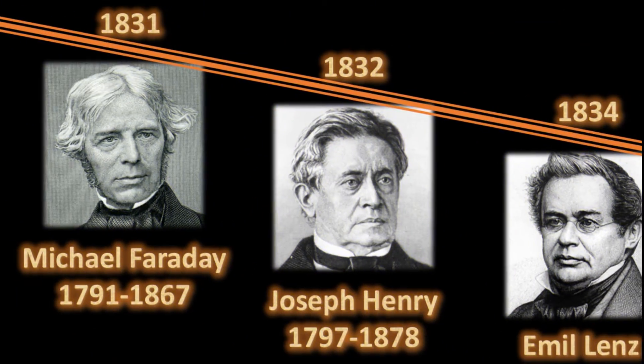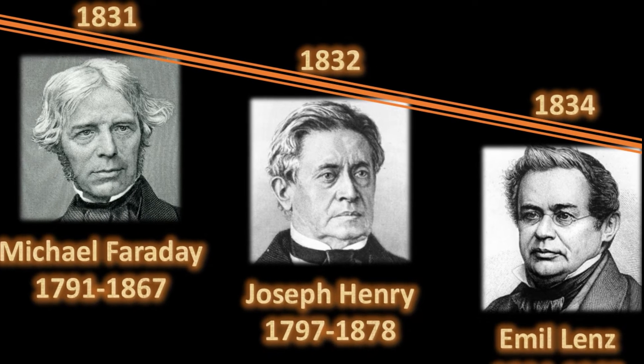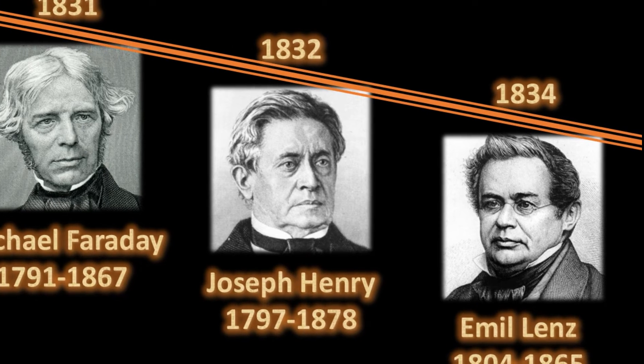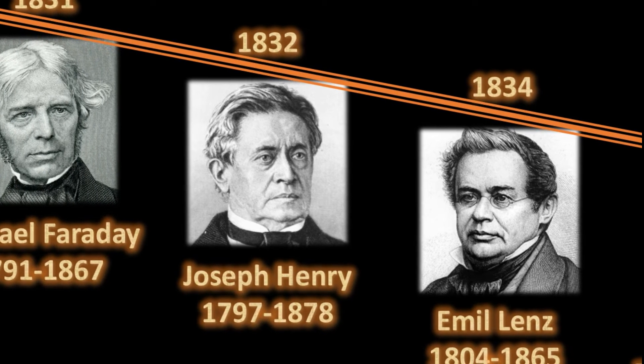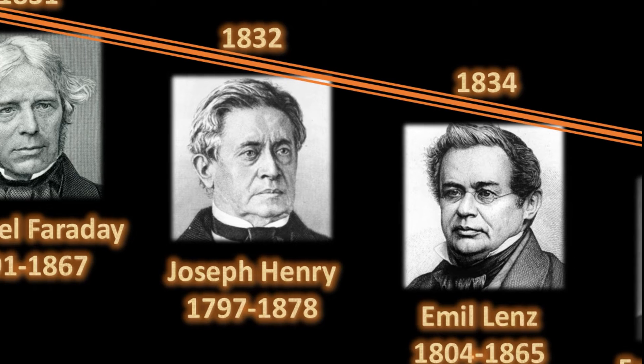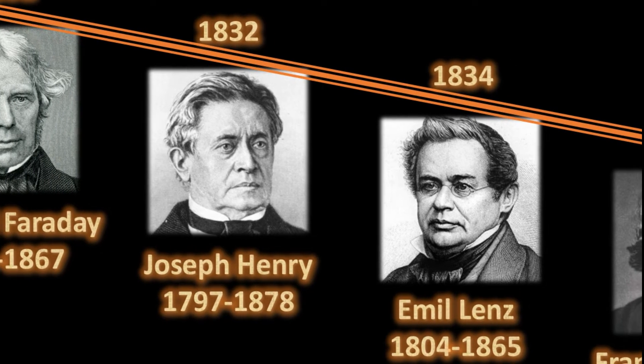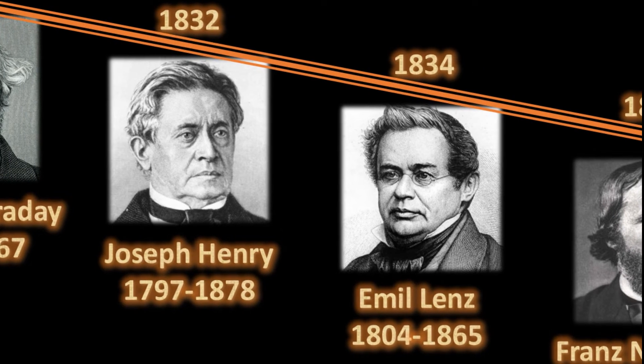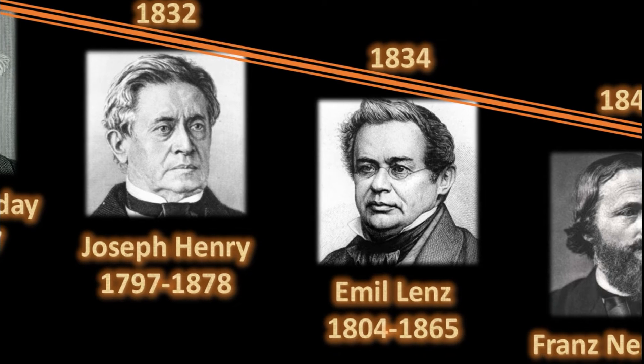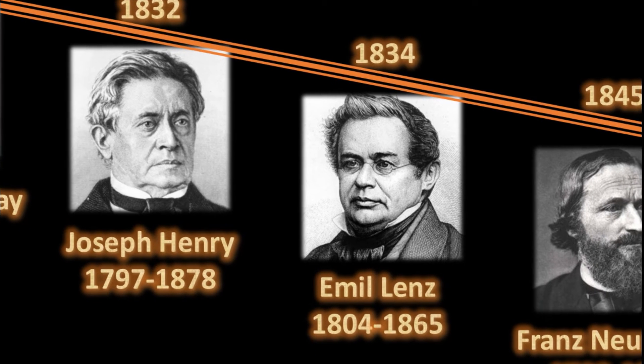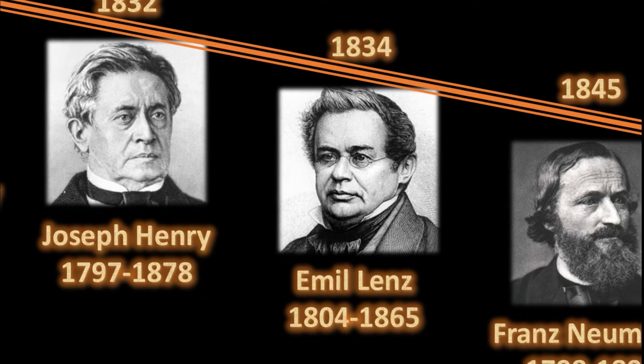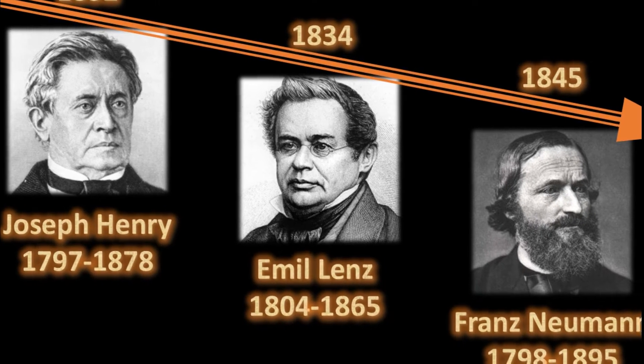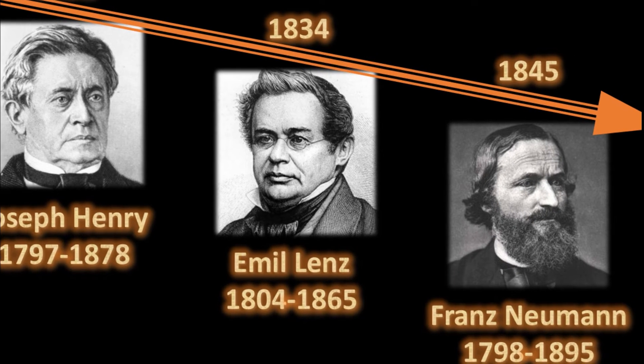It actually took more than a decade from the discovery of the phenomenon of electromagnetic induction in 1831 by Faraday to arrive at a concrete mathematical description of the phenomenon. In 1832 the American scientist Joseph Henry discovered the phenomenon of self inductance independently of Faraday. The Russian scientist Emil Lenz clarified the directionality of the electromotive force and the induced current in 1834. The laws of induction of electric currents in mathematical form was only established in 1845 by the German scientist Franz Ernst Neumann.